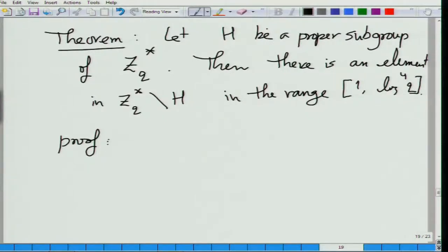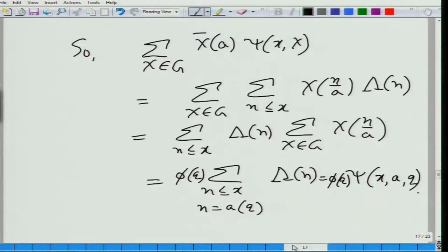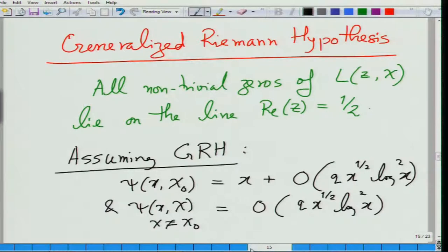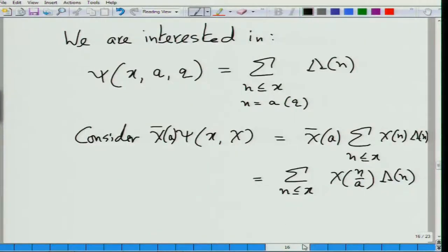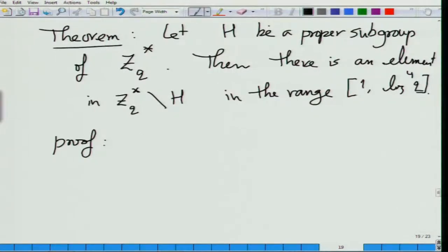So we have H as a proper subgroup. I think I have made a mistake in stating the consequence of GRH. When I say q times square root of x times log squared x, this is not true. The q is here: square root of x times log squared of qx. Maybe this is what stopped you from proving it. So H is a proper subgroup of z_q*.